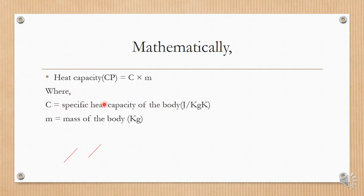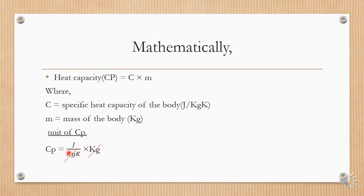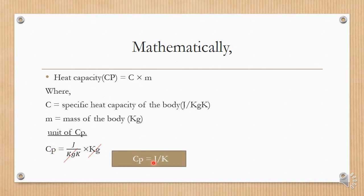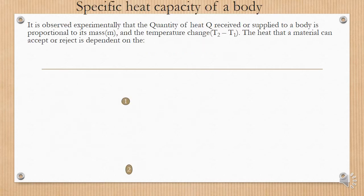What is the unit of CP? Since the specific heat capacity c is in joules per kilogram per Kelvin, multiplied by the mass of the body in kilograms, the kilograms cancel out. So CP has units of joules per Kelvin.